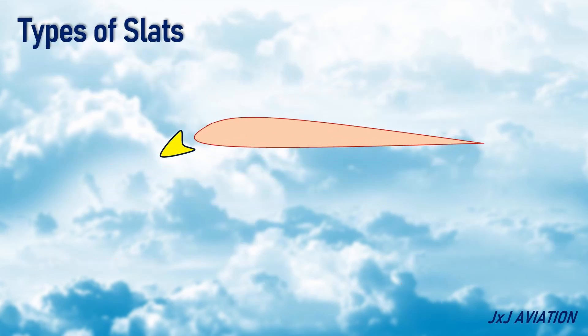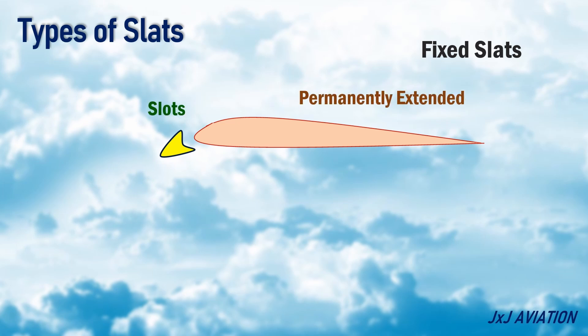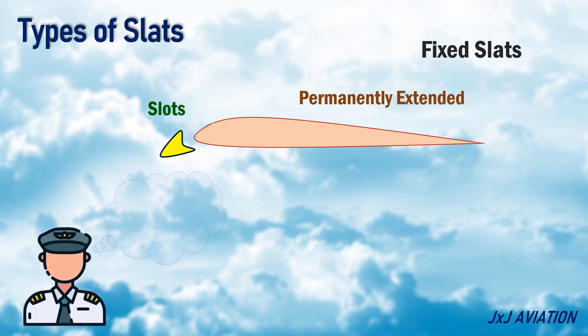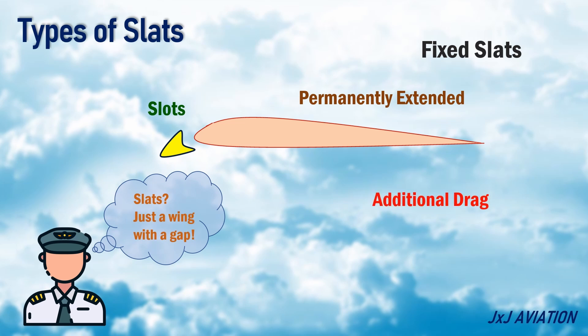The different types of slats. Fixed slats: these slats are also known as slots. They remain permanently extended and cannot be moved by the pilot. These slats create additional drag during cruise, which affects the wing's efficiency.